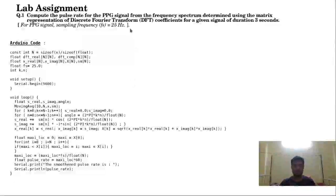Let's discuss the task for this experiment. The task is to compute the pulse rate for the PPG signal from the frequency spectrum determined using the matrix representation of discrete Fourier transform. The signal duration is given as three seconds and its sampling frequency is 25 hertz. So we can say that there are a total of 75 samples in the data.